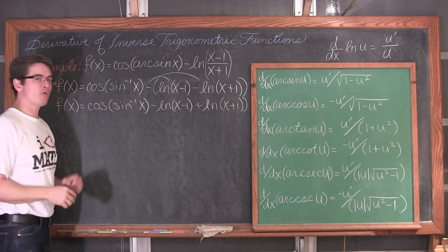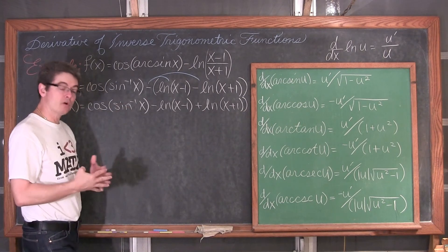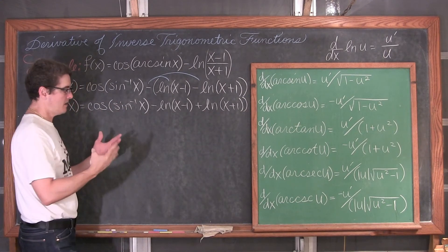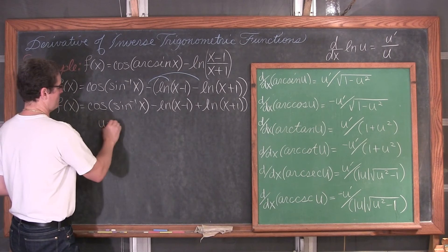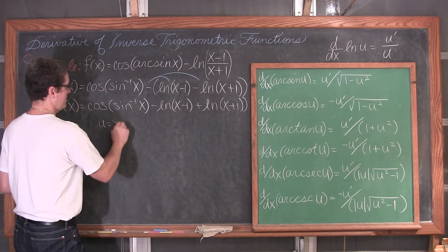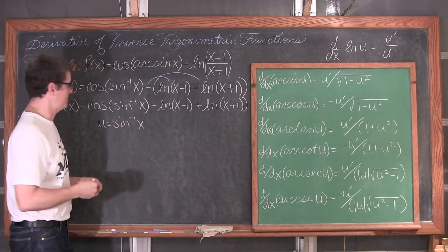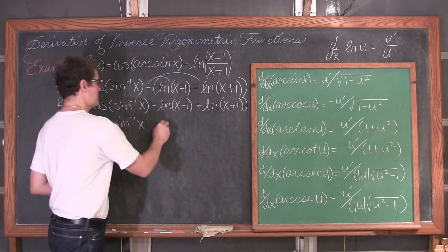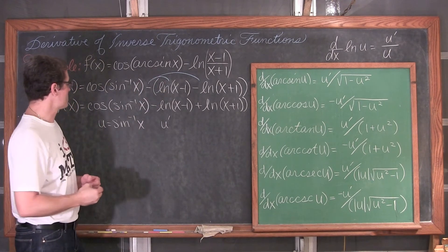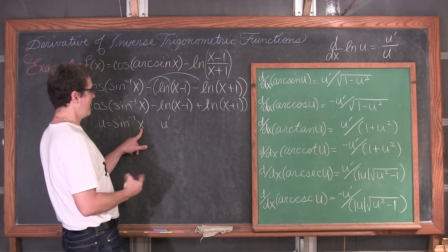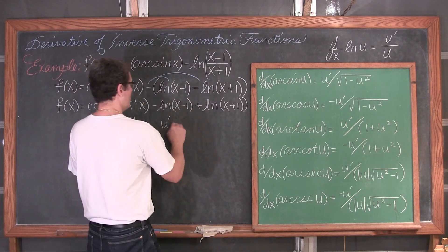Now for the derivative: the derivative of cosine is negative sine, but we have an inside function so we use the chain rule. U equals inverse sine of x, and u-prime — the derivative of x with respect to x — is 1. So it is the derivative of cosine of u, which is negative sine of u, times u-prime.